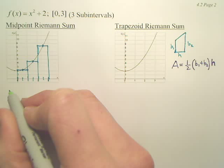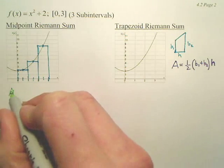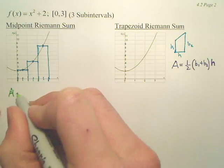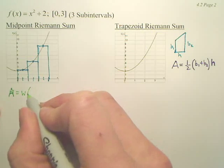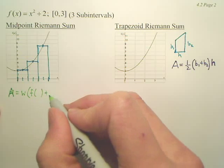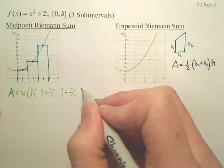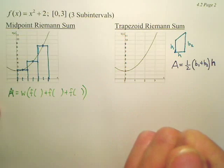So the formula, the area under the curve is equal to width times f of something, plus f of something, plus f of something. Are we okay with that?